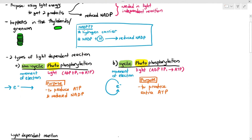For cyclic photophosphorylation, the movement of the electron is cyclical — it moves in a loop, so its beginning and ending spot are the same. The purpose of cyclic photophosphorylation is only to produce extra ATP; it does not produce reduced NADP.